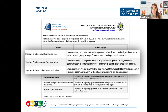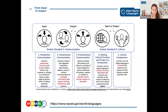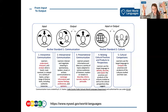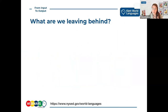Looking at the five learning standards, we're really going to be drawing on these three standards - the three modes of communication - to support us in going through that input to output process with an objective of proficiency. There's a great graphic from the state website that does a really great job of showing what the different pieces of the standards look like, focusing on the three modes of communication and the overarching communication standard as our main goal.